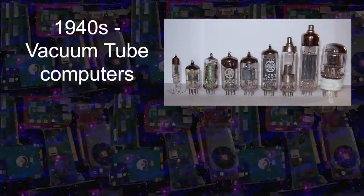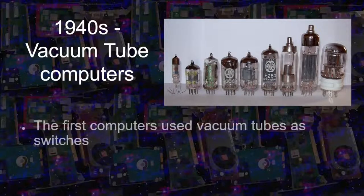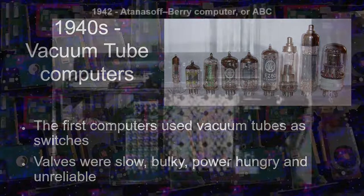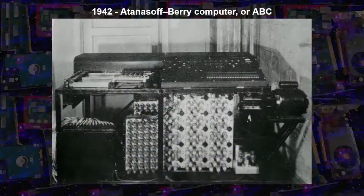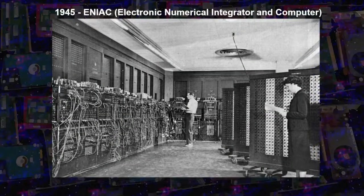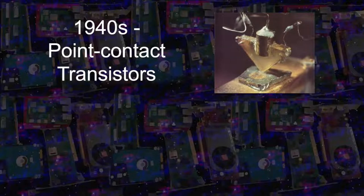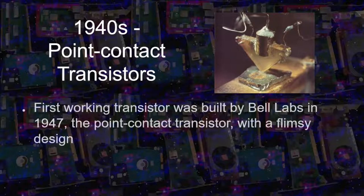It all started with thermionic valves, used to build the first digital computers in the 40s. But tubes were slow, took a lot of space, needed a lot of power, and were unreliable. Imagine the hassle to keep such a computer running. Around this time, the first transistors started to be developed — the point contact transistor — with a rather flimsy design.